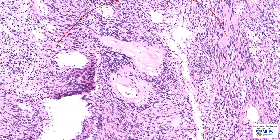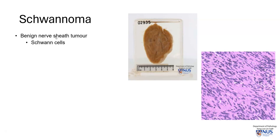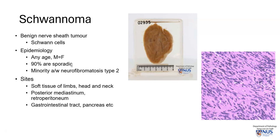Let's learn a bit more about schwannomas. Schwannomas are benign nerve sheath tumors arising from Schwann cells, and they can occur at any age. Most are sporadic, but a small percentage may be associated with syndromes such as neurofibromatosis type 2. They can occur at any soft tissue site — in the limbs, the head and neck, the posterior mediastinum or retroperitoneum, and visceral organs such as the gastrointestinal tract.